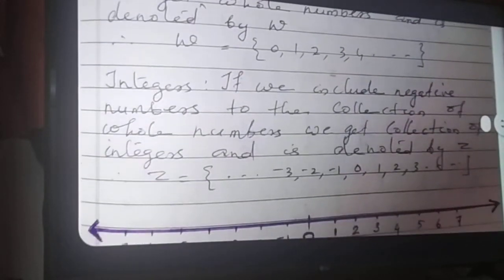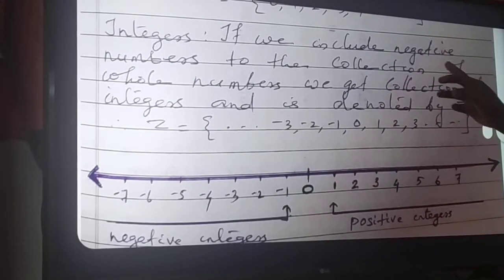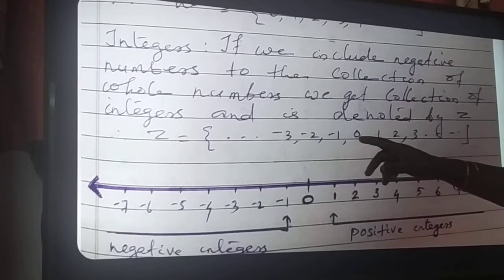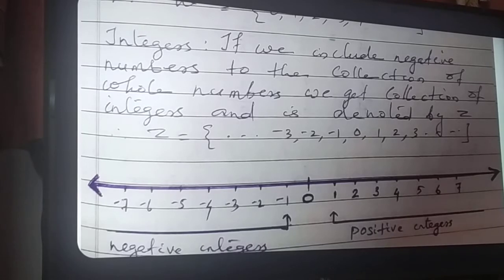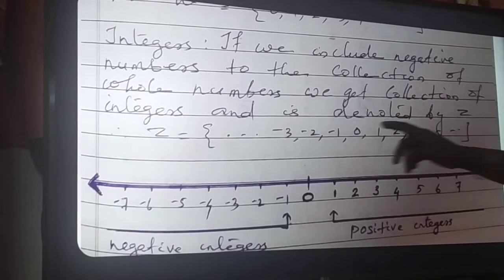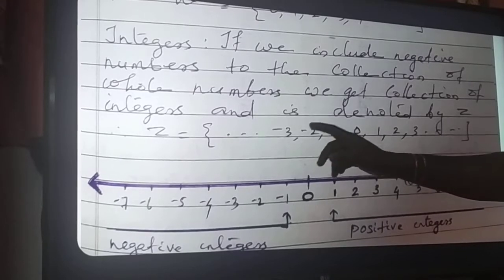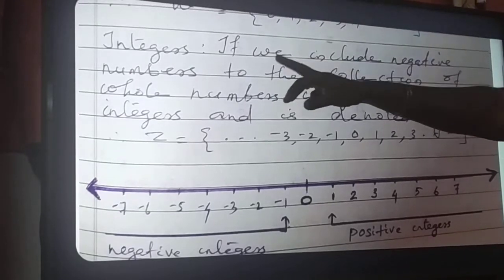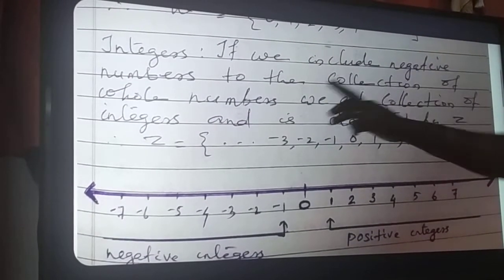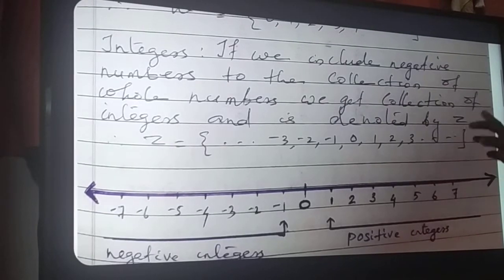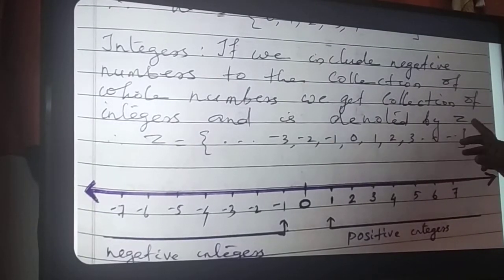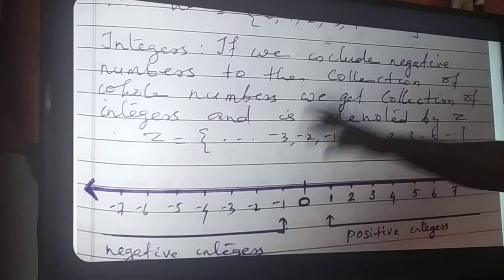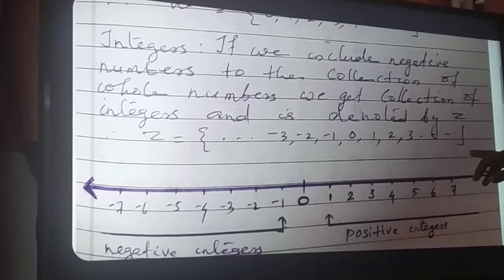Next, we go to integers. If we include negative numbers to the collection of whole numbers — whole numbers starting from 0: 0, 1, 2, 3, etc. — along with 0, 1, 2, 3, 4 we will add negative numbers: minus 1, minus 2, minus 3, also including along with the whole numbers. We will get integers. If we include negative numbers to the collection of whole numbers, we get the collection of integers, and it is denoted by Z.